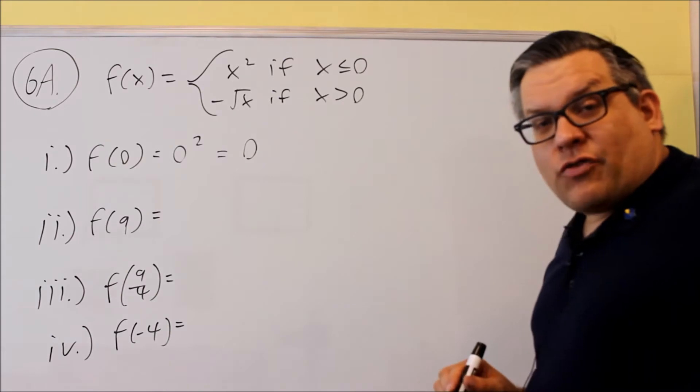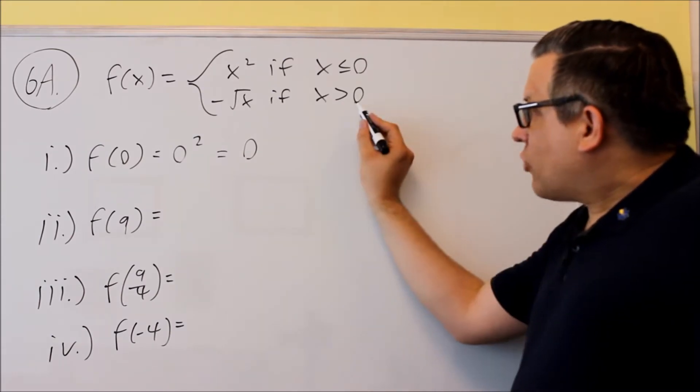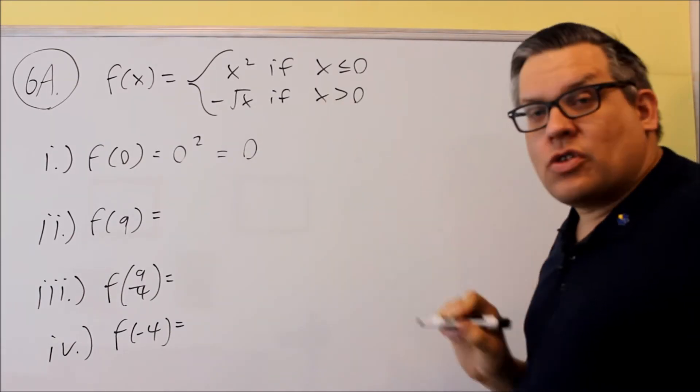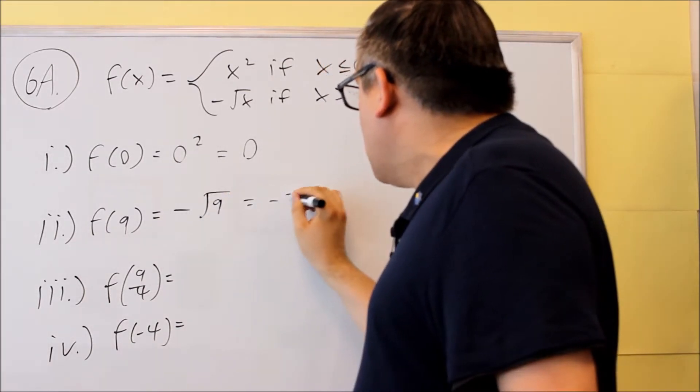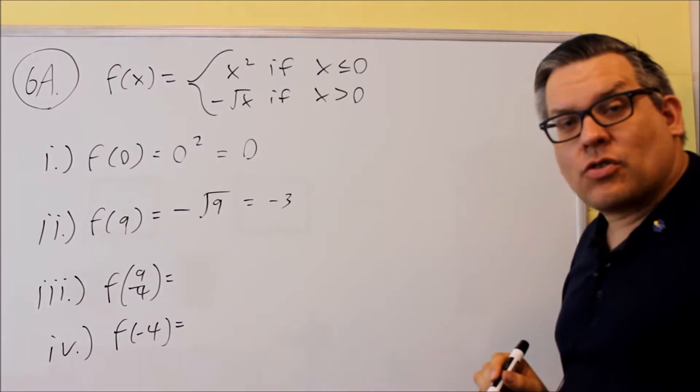For double i, we're doing f of nine. Nine is greater than zero, which means we're only going to use the second equation only. We put in the square root of nine, and we get negative three for the answer there.